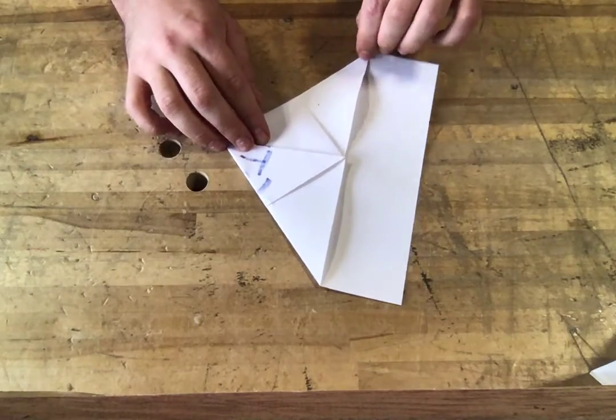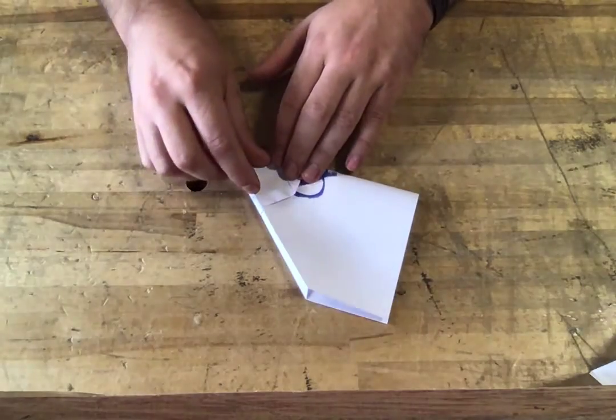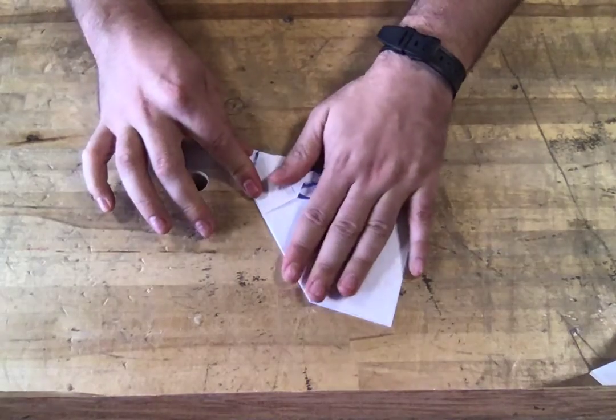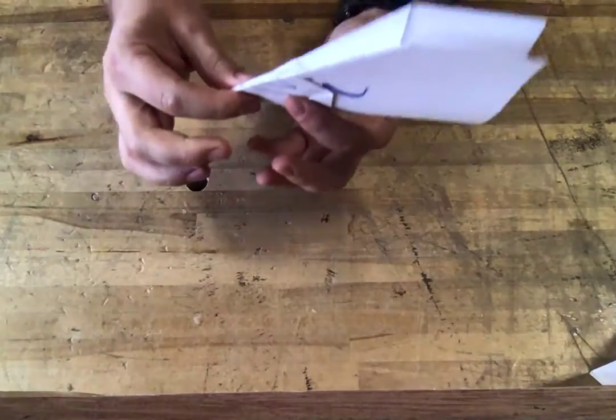So now I'm left with this. I'm going to fold it in on itself. So now it's really starting to look more like a paper plane. And all we got to do is make the wings.